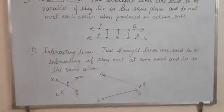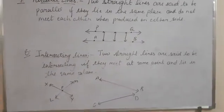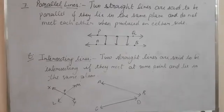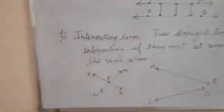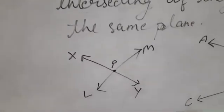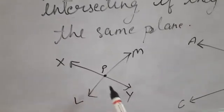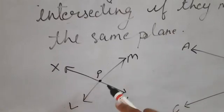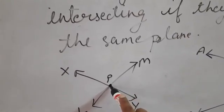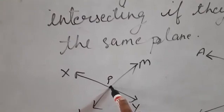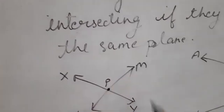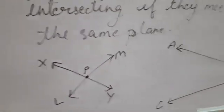The next concept is intersecting lines. Two lines are said to be intersecting if they meet at some point and lie in the same plane. For example, line XY and line LM are intersecting — they are cutting and meeting each other at point P. So XY and LM are intersecting lines.